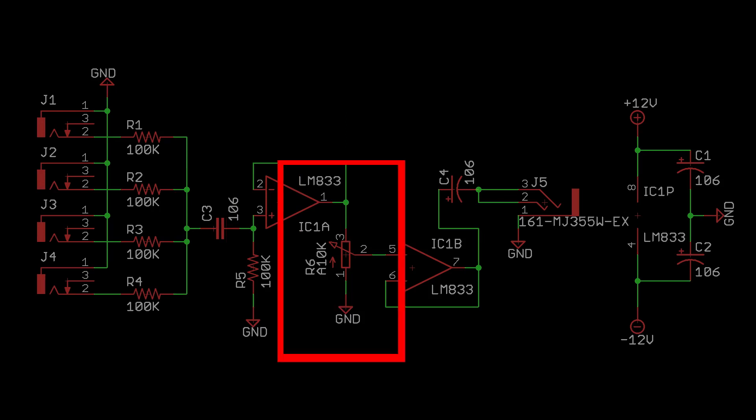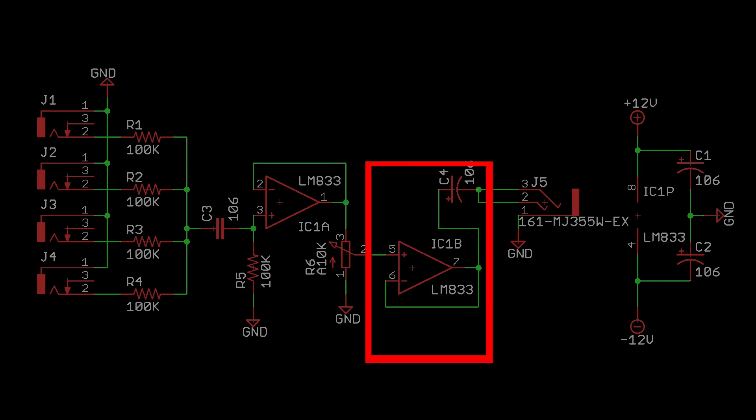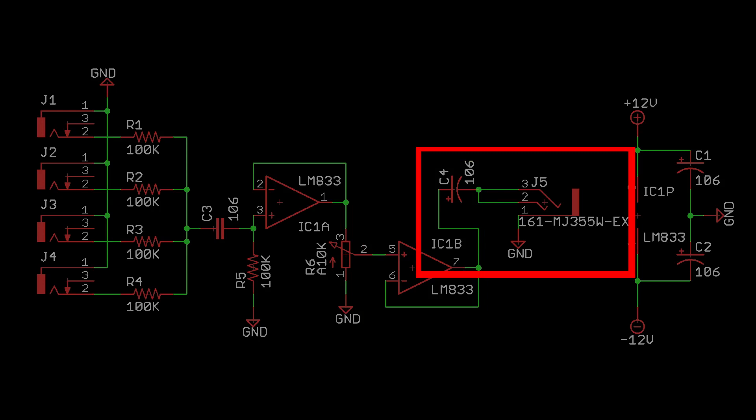Then the output volume is controlled by this 10k audio taper potentiometer. Another op amp stage to drive the output, and a DC blocking capacitor with the signal exiting through a stereo jack here.